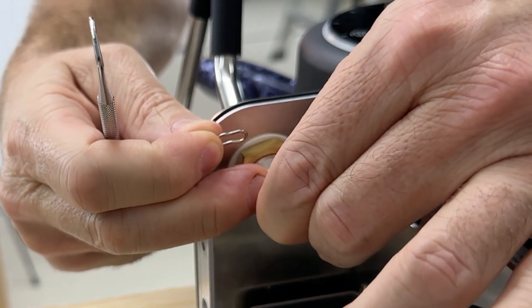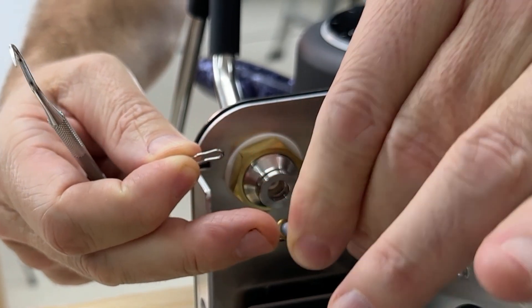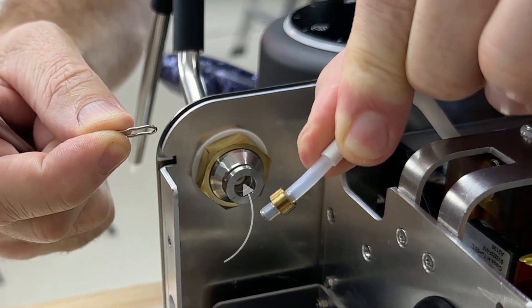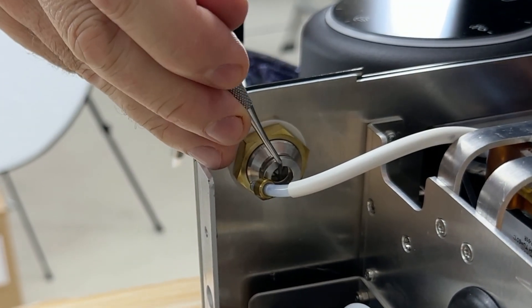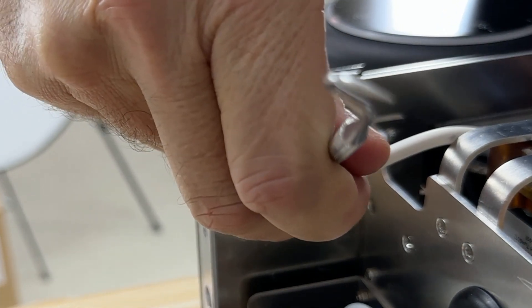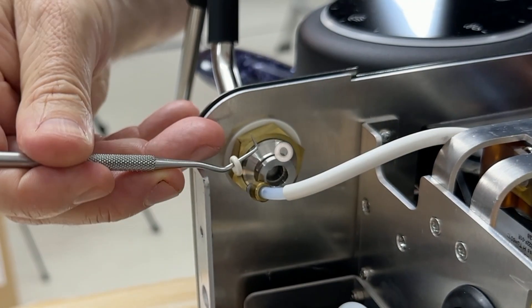And then what I'm going to do is pull this tube out and what always happens is the o-ring is still inside. So I'm just going to fetch inside and take it out. So that is the o-ring.